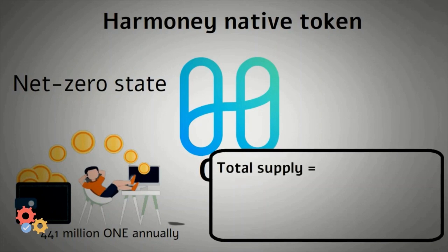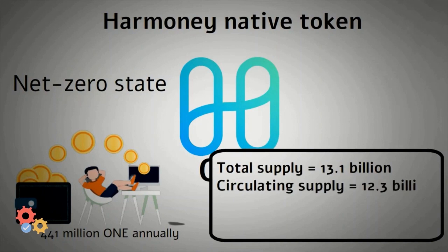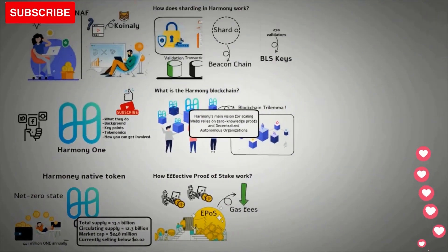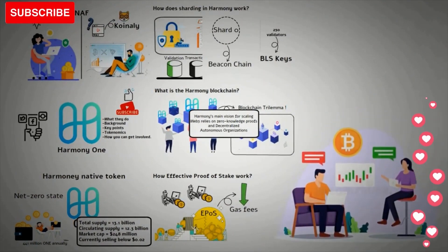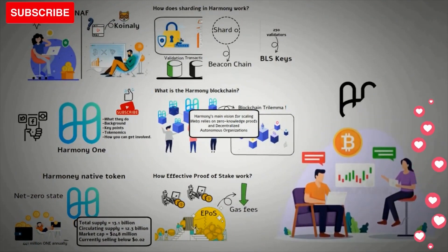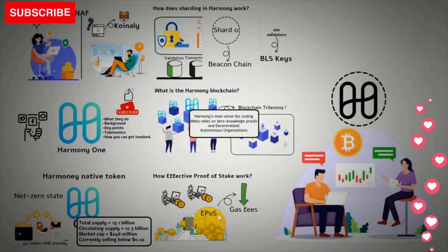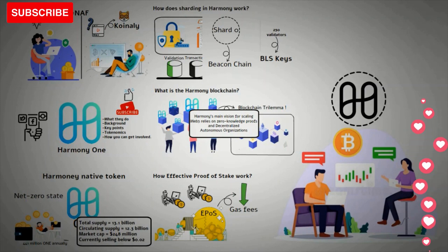ONE has a total supply of about 13.1 billion, with a current circulating supply of about 12.3 billion and a market cap of about $248 million. Whether you're an investor, DeFi dApp user, or staker, Harmony has a solid ecosystem to explore and get involved with. Even at its current roadmap stage, there's a lot to use and discover, with more cross-shard capabilities coming in the future.